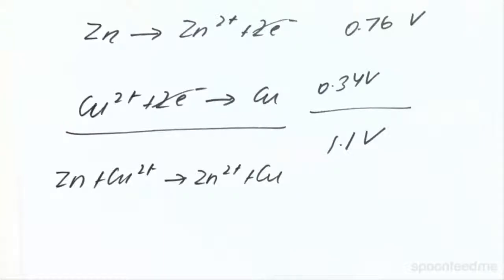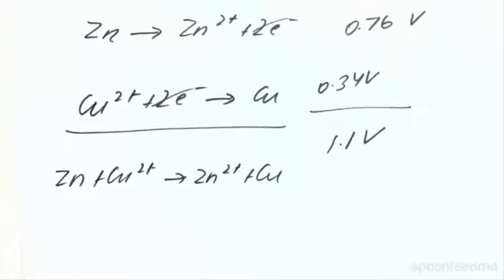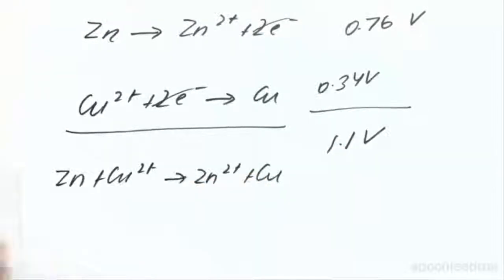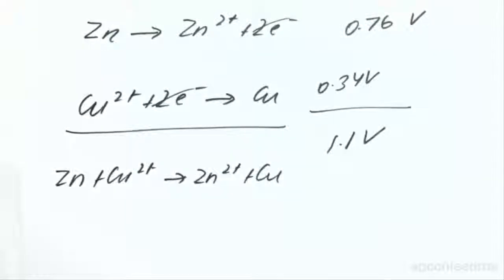If we get an overall cell with a positive potential, this tells us that the reaction between these two is spontaneous. We've got a positive potential here, so we know that this galvanic cell's reaction is going to be spontaneous — it's going to occur on its own without any external input. That brings us to the end of this video. Thank you.